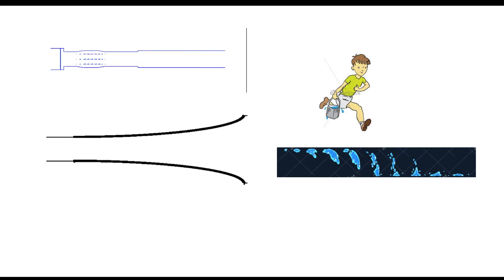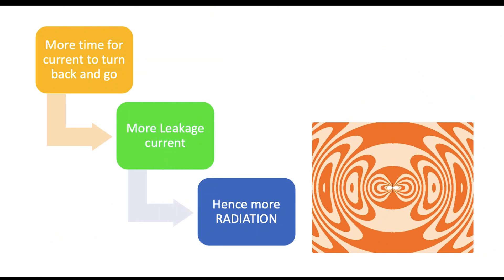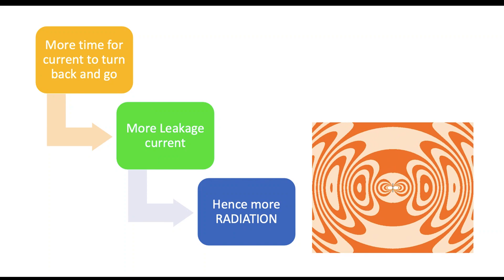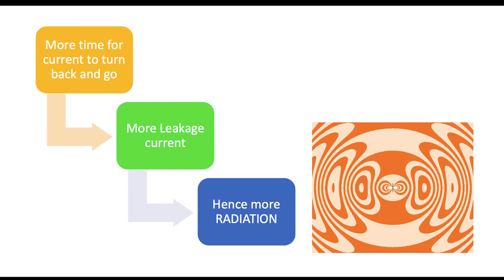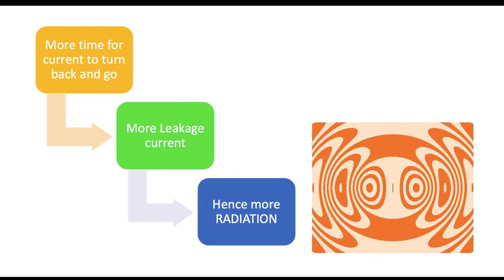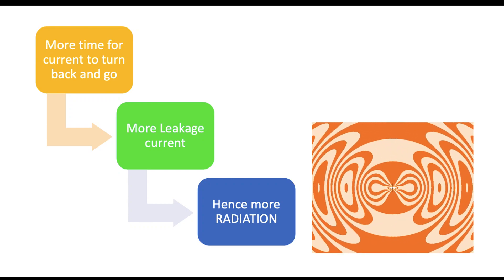What we basically did was taper the ends of the transmission line. The moment we tapered, the time taken for the current to turn back and go increased, hence radiation increased, hence distance covered will also increase. More time for the current to turn back and go means more leakage current and hence more radiation. All we did in this episode was taper the edges — the moment I taper the ends, I get more radiation.